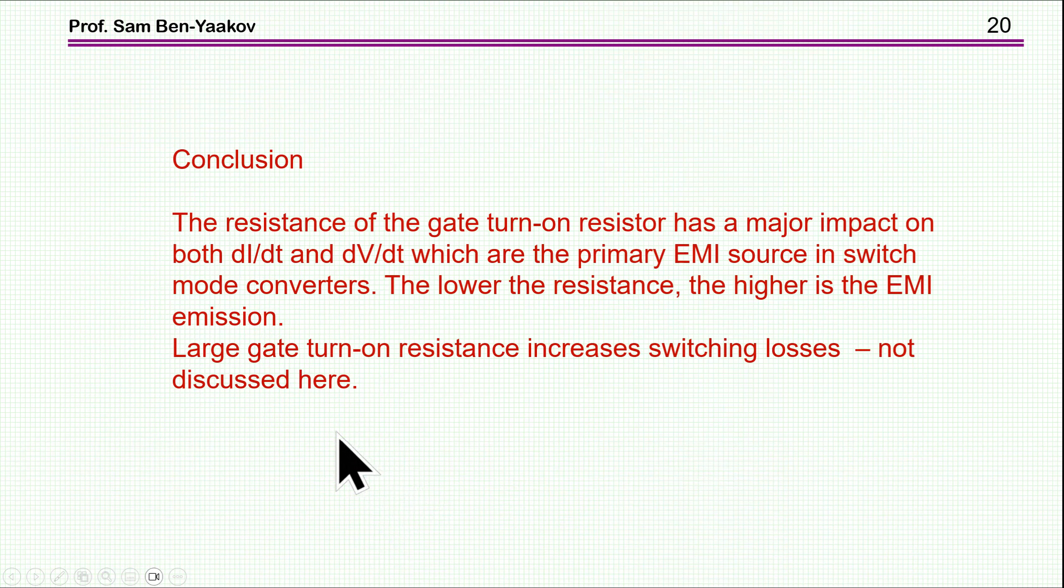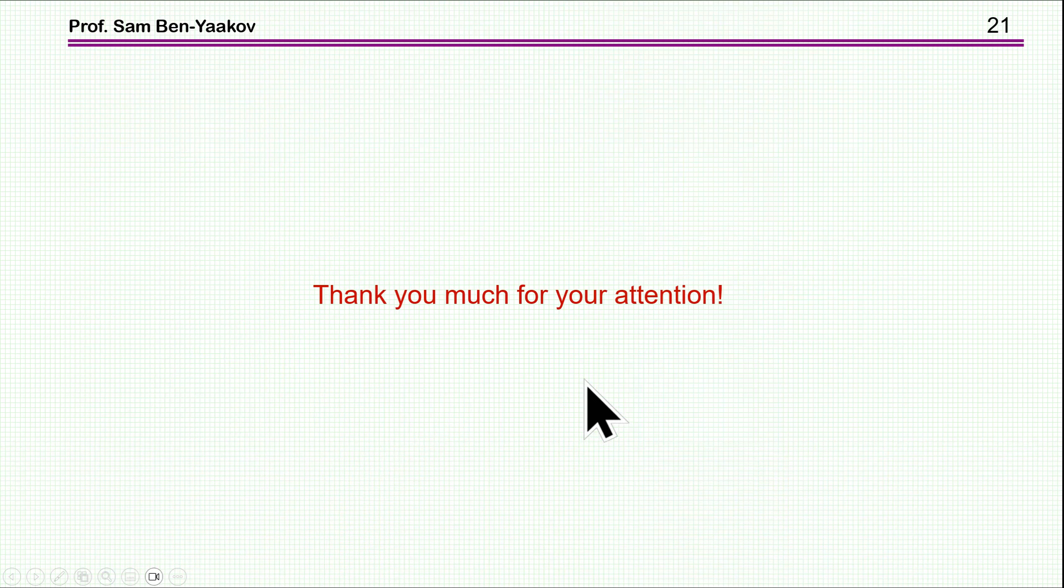So what is the conclusion here? We have seen that the resistance of the gate turn-on resistor has a major impact on both the dI/dt and dV/dt, which are the primary EMI source in switch mode converters. Now the lower the resistance, the higher is the EMI emission. Now large gate turn-on, which of course will reduce the dV/dt and the dI/dt, will increase the switching losses. I'm not discussing this subject here, which is outside the scope of this presentation. This brings me to the end of this presentation. I thank you very much for your attention. I hope you have found it of interest, and perhaps it will be useful to you in the future. Thank you very much.